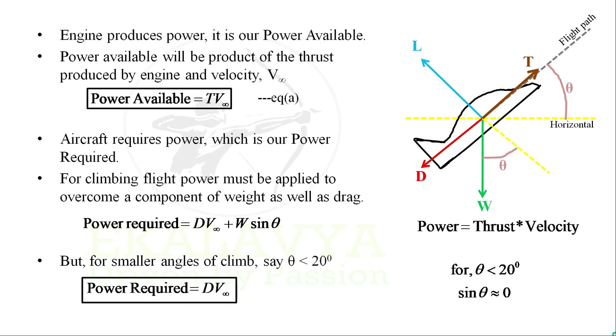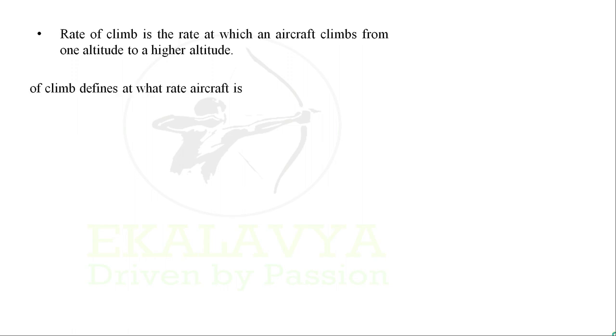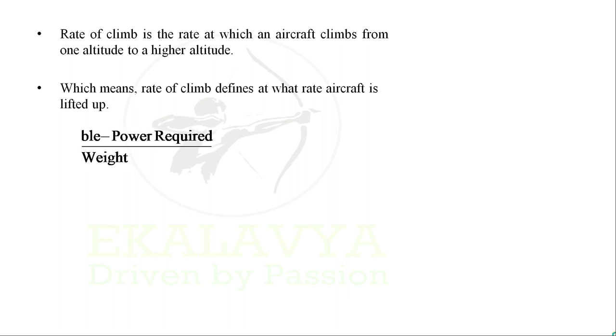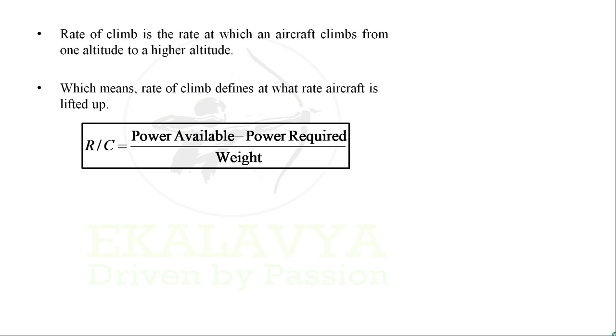Let us denote this as equation B. Rate of climb is the rate at which an aircraft climbs from one altitude to a higher altitude, which means rate of climb defines at what rate aircraft is lifted up. We can express rate of climb as: R/C equals (Power Available minus Power Required) divided by Weight.